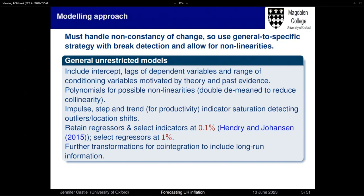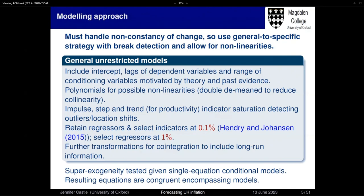We include step, impulse, and trend indicator saturation, allowing us to detect outliers, location shifts, and trend breaks over the entire period. Then we do model selection, retaining regressors and selecting for non-linearities and impulses at a very tight 0.1% significance level — a strong prior that these shouldn't enter unless they're very significant. Once we've picked up breaks and outliers, we select over regressors at 1% significance, undertake further transformations for cointegration, and do super-exogeneity testing. The resulting equations are congruent encompassing models, so we're content to proceed with single-equation models.